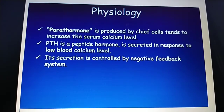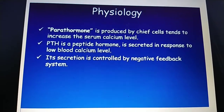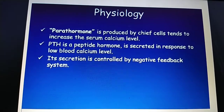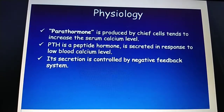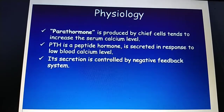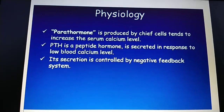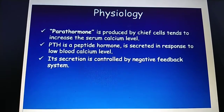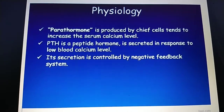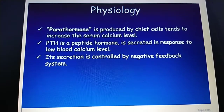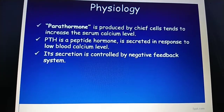Parathyroid hormone works on the bones, kidneys, and intestine. In bone, it helps produce calcium. In the kidney, it helps in reabsorption of calcium. In the intestine, it mainly works on absorption of calcium. Its secretion is controlled by a negative feedback system.